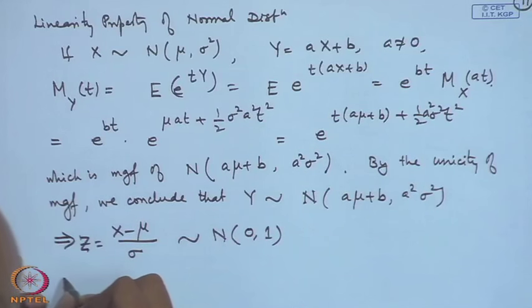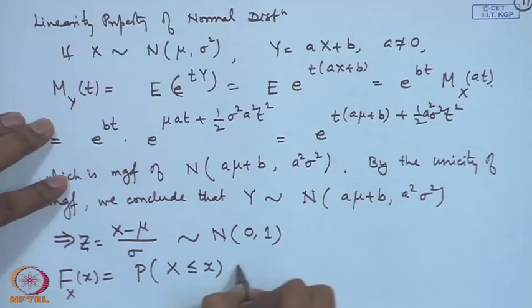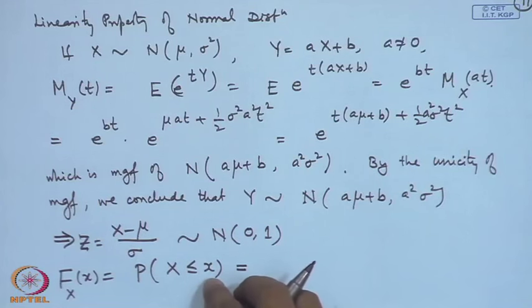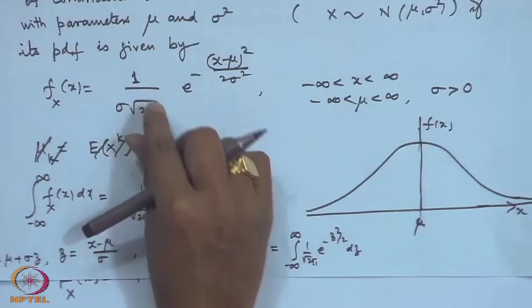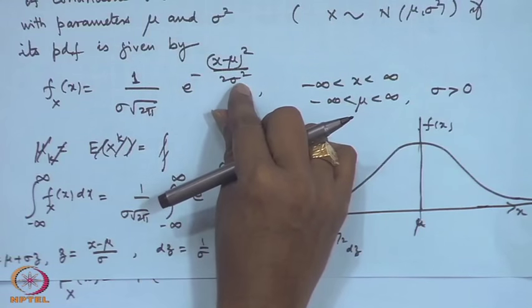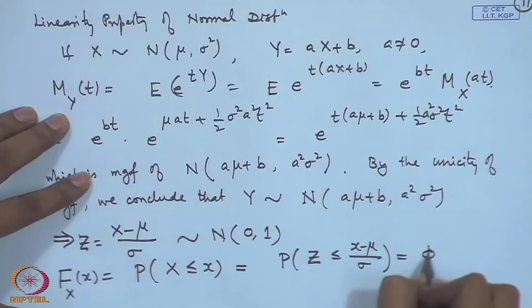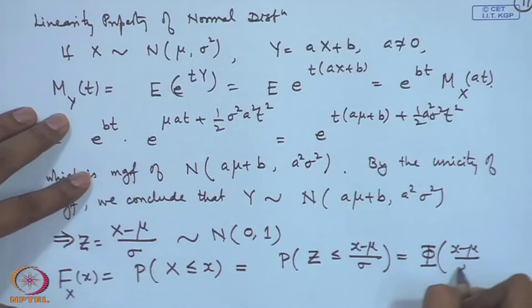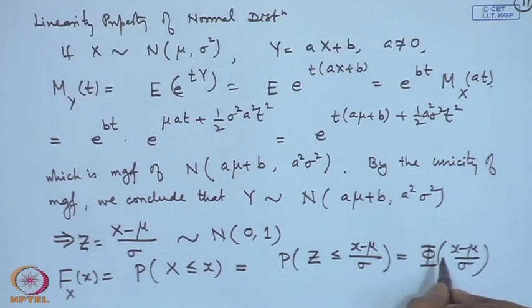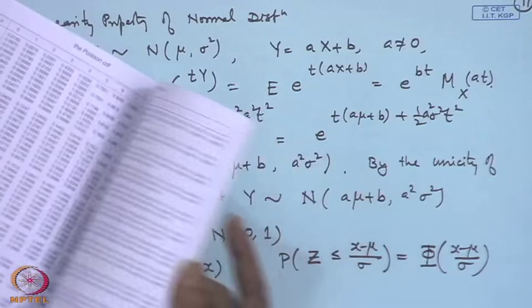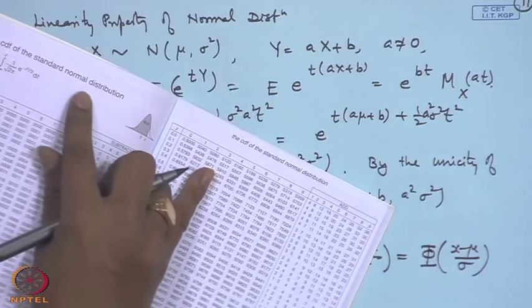This standardization property is useful for evaluating probabilities related to a general normal distribution. The CDF of X is P(X ≤ x) = P(Z ≤ (x−μ)/σ) = Φ((x−μ)/σ), where Φ is the standard normal CDF. Tables of Φ are available in almost all statistical texts, so instead of computing difficult integrals for every different μ and σ, we just use this transformation.